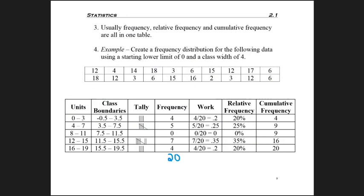And then lastly is those cumulative frequencies. For those, we just copy the first frequency over, and then I take 4 plus 5 to get 9, 9 plus 0 to get 9, 9 plus 7 to get 16, and 16 plus 4 to get 20.